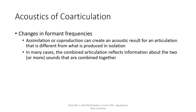When we look at co-articulation acoustically, like in the spectrogram examples shown, we see changes in formant frequencies on the basis of co-articulation with surrounding sounds. Whether there's assimilation happening — where an articulation has changed to combine two sounds together — or co-production where two articulations overlap, we can get an acoustic result that's different from what we'd see in isolation. In many cases, probably all cases, that combined articulation has information about both or even more of the speech sounds combined together. Human brains are smart enough to figure this out, and perceptual experiments have shown that small changes to the acoustics of sounds, on the basis of an upcoming sound, can affect how people perceive speech.